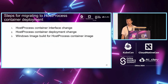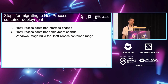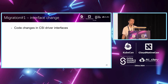Next, I will show you how we do the migration to host process container deployments. It mainly involves three kinds of changes: interface change, deployment change, and building a new Windows image for the host process container image. First, about the interface change — we need to make some code changes in the CSI driver interfaces. It mainly involves six interfaces on the CSI driver node plugin.